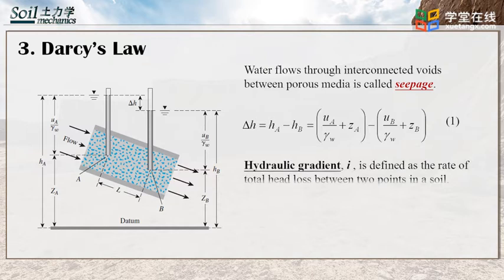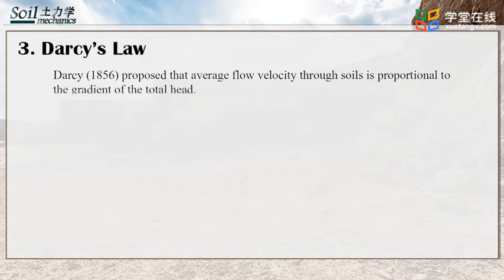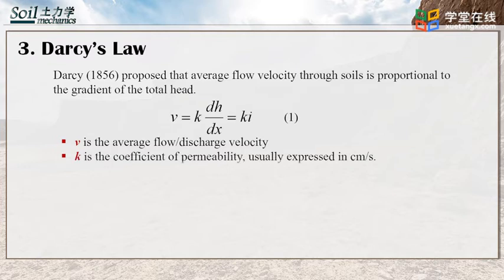A hydraulic gradient I is defined as the rate of total head loss between two points in the soil, as expressed in equation 2. Darcy proposed that the average flow velocity through soil is proportional to the gradient of total head. This equation is called Darcy's equation, where V is the average flow or discharge velocity and K is the coefficient of permeability with units of cm per second.